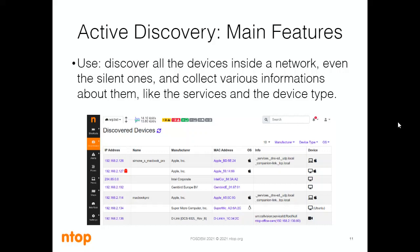For example, through active discovery we can understand the device type, the operating system, and the manufacturer of a device. ntopng does this using different protocols. For example, we use ARP to discover all the devices inside the network, and we use MDNS to understand the services offered by the network. We can also use SNMP to find, for example, the physical location of a device inside the network. We use other types of information as well — for example, the MAC address to understand the device type or the operating system in some cases, and so on.